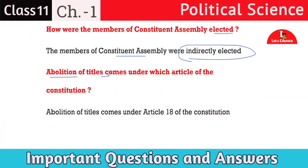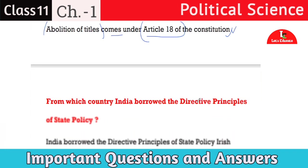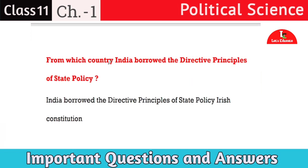Next question: abolition of titles comes under which article of the constitution? The abolition of titles comes under Article 18 of the constitution. Next question: from which country did India borrow the Directive Principles of State Policy? India borrowed the Directive Principles of State Policy from the Irish constitution.